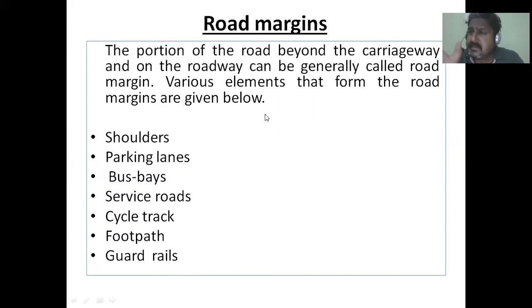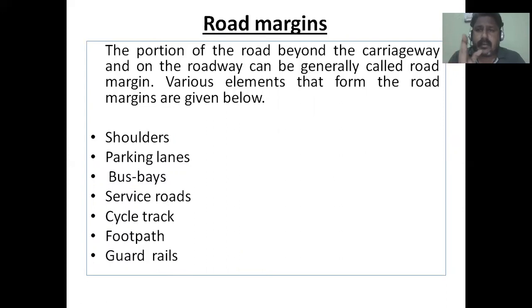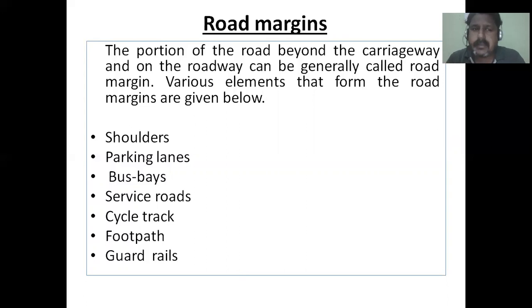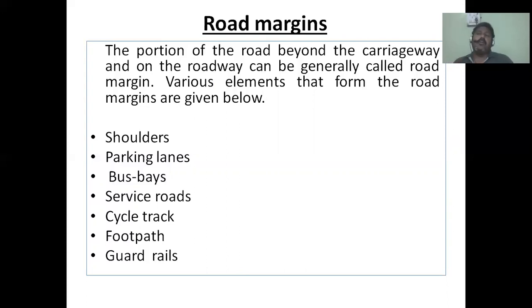We have already covered some road margins in the previous video. We have also seen the shoulders. Guardrails are a very important element — you have seen such a railing type guardrail, which prevents any vehicle from falling down if there is a drop at the edge.